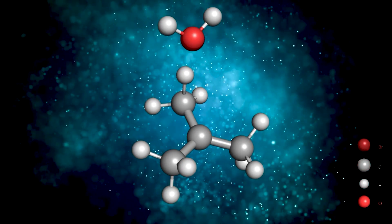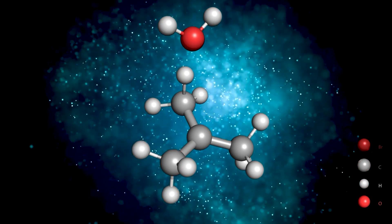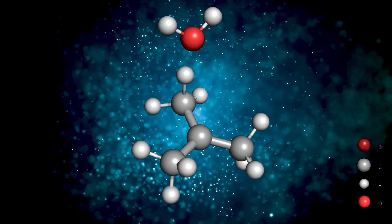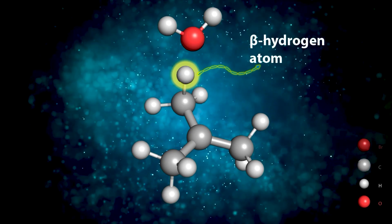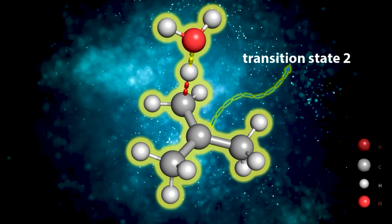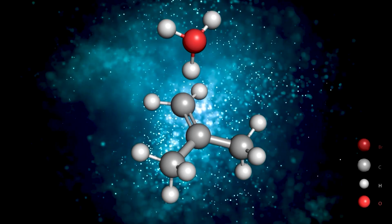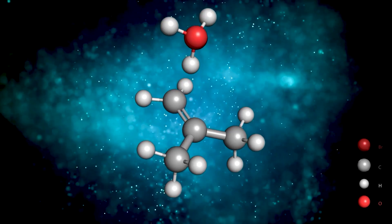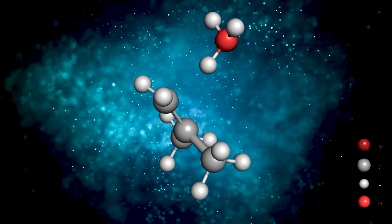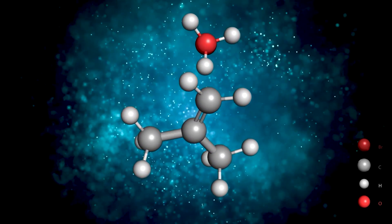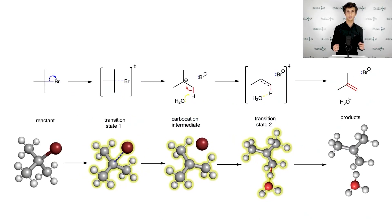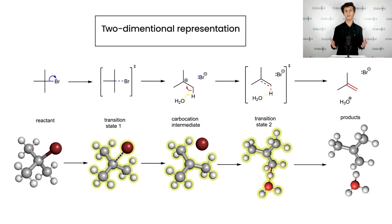The second step of E1 mechanism is a proton transfer between base and carbocation. Water acts as a base in this case. It attacks the beta-hydrogen atom and abstracts the proton, passing through the second transition state and yielding isobutene and hydroxonium ion. The products can be seen on the screen, whereas bromide anion is omitted for clarity. Now you can see the two-dimensional representation of the reaction mechanism on the slide.